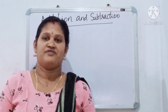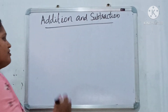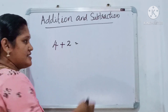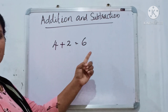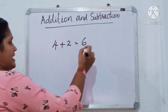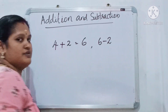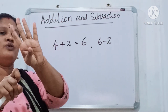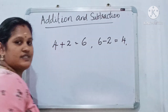Listen carefully, children. Next — addition and subtraction. We know that 4 plus 2 is equal to 6. Using subtraction, we can write 6 minus 2 equals 4.